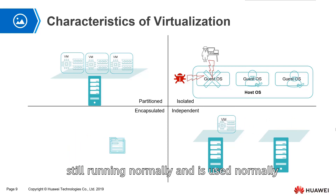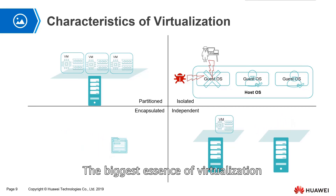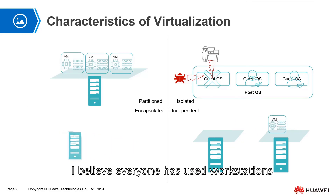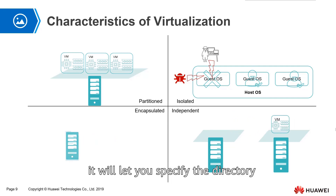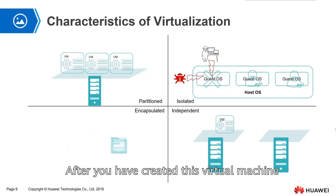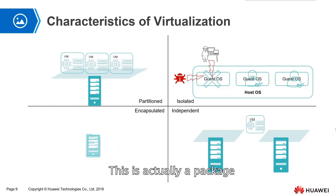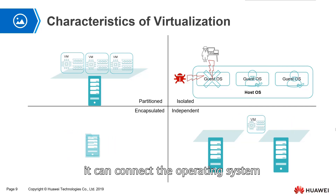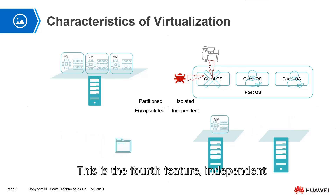The third feature is encapsulation. The biggest advantage of virtualization is that it logicalizes a physical machine into a file or folder. Everyone has likely used a workstation. Every time you create a virtual machine on the workstation, it asks you to specify a directory. After you create the virtual machine, looking in that directory you will see a collection of files — this is the encapsulation. Once packaged, it connects the operating system and hardware, and the operating system can run across different hardware. This is the fourth feature: independent.